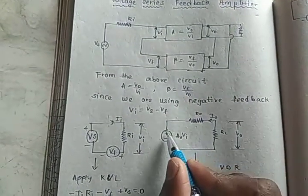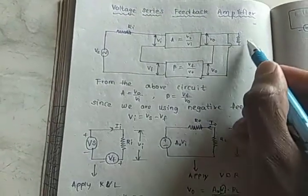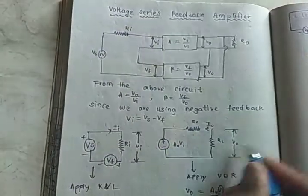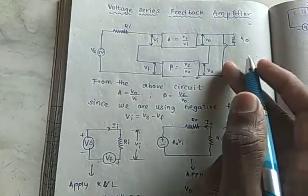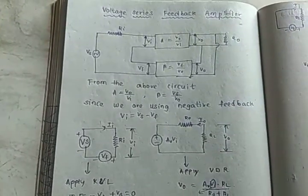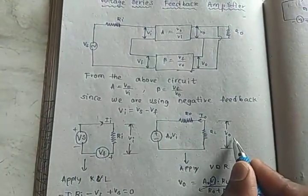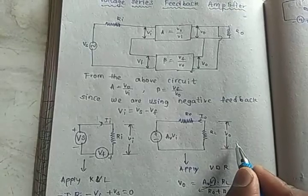And the amplifier output resistance R0 and the load resistance may be here RL. The output voltage will be V0.